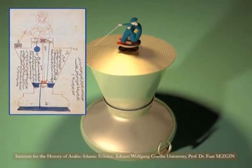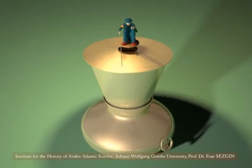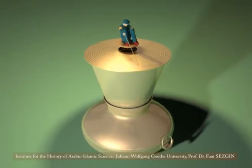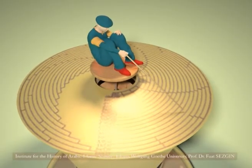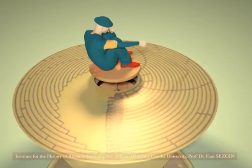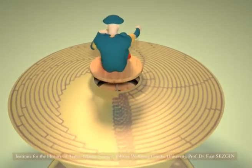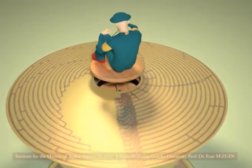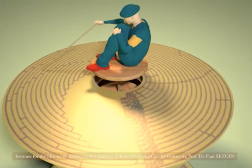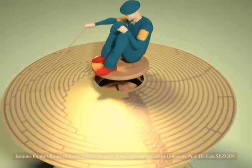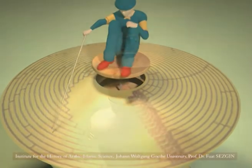The clock consists of a beaker on a base. On the top it is covered with a flat lid. A scribe is seated on a seat at the center, holding in his hand a reed pen, the tip of which is on the ring a little outside the first mark on the scale.